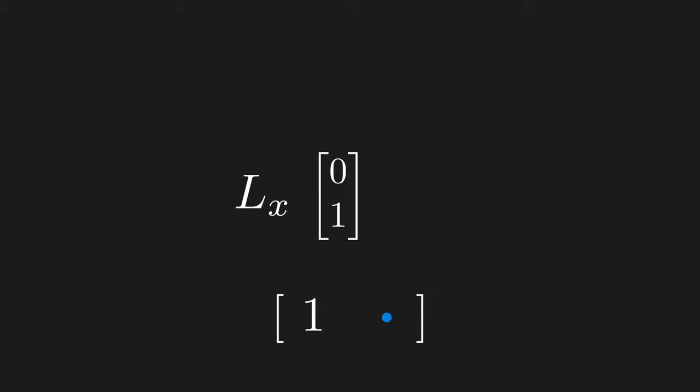The next column tells us where the y basis vector goes. So plugging in 0, 1, which has a component of 0 on the x axis, we get a 0 here. And this is the matrix of this linear functional.